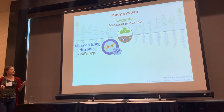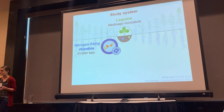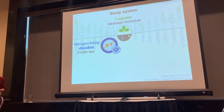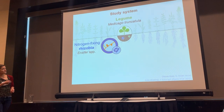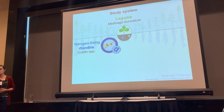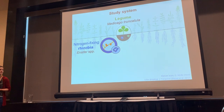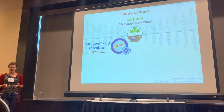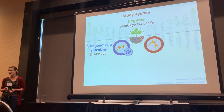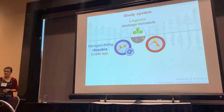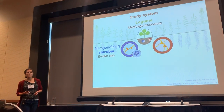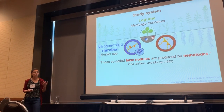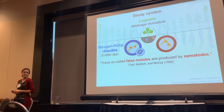We studied these questions in the legume-rhizobia mutualism. For those not familiar with this system, it's incredibly cool. Specifically, we studied the legume Medicago truncatula, which receives fixed nitrogen from mutualistic bacteria housed in specialized nodules on their roots. In exchange, the host provides these bacteria with housing in these nodules as well as carbon. However, these bacteria aren't the only things that live on legume roots. If you dig up a legume, you're likely to see structures that look suspiciously like nodules but a little bit different. For over 80 years, it's been known that these so-called false nodules are actually formed by a parasitic nematode.